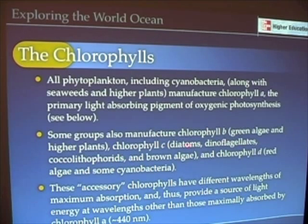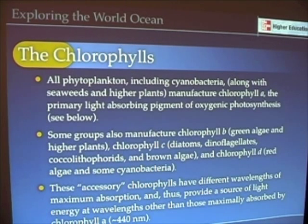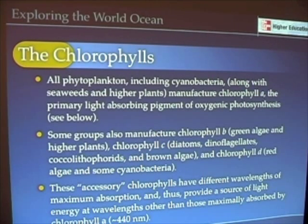The diatoms and dinoflagellates we just talked about, as well as coccolithophorids and the kelps that we find offshore here in California, they have chlorophyll C along with chlorophyll A. And cyanobacteria, as well as red algae, have a chlorophyll called D.